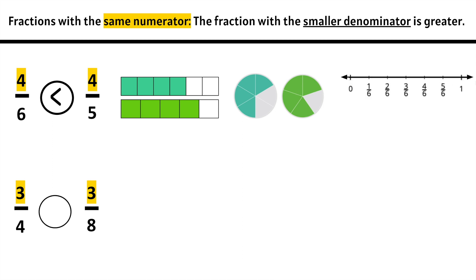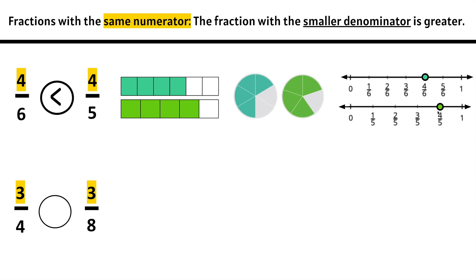Here we have 0 to 1 whole broken up into 6 equal parts because the denominator is 6. We need 4/6. Now we need a number line broken up into 5 equal parts, and we need the same numerator, which is 4: 1/5, 2/5, 3/5, 4/5. We notice that 4/5 is greater than 4/6, because 5ths are greater in size than 6ths. And if we have the same amount of each, then we know 4/5 are greater.